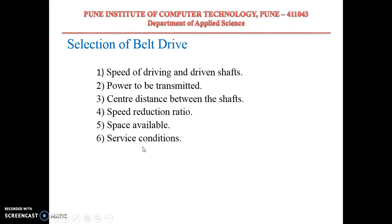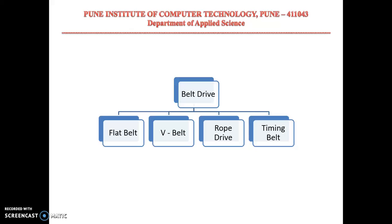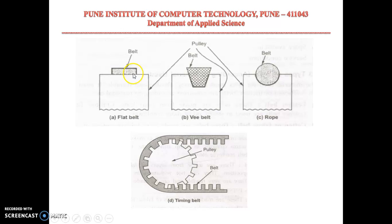There are different types of belt drives: flat belt, V-belt, rope drive, and timing belt. The first three are distinguished by their cross-sectional area. A flat belt has a rectangular cross section, where the width of the belt is substantially higher compared to its thickness.